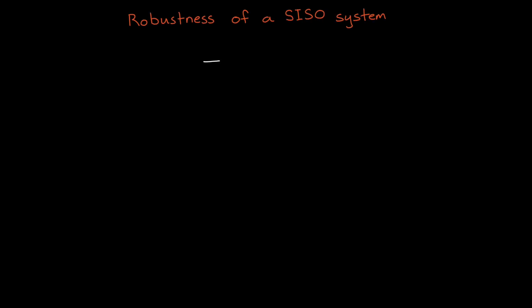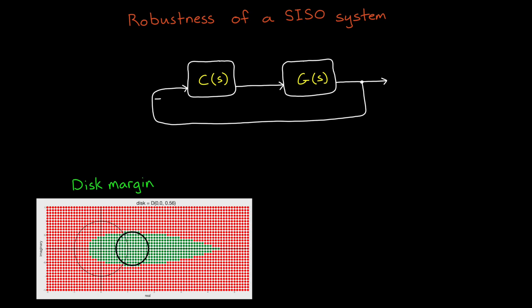In the last video, we saw how we need to look at simultaneous gain and phase variations in order to assess the robustness of a single-input, single-output system, and disk margin was a convenient way to represent the set of allowable variations. In this video, we're going to expand this to use disk margins to assess the robustness of multi-input, multi-output systems, and we're going to do this in three parts.